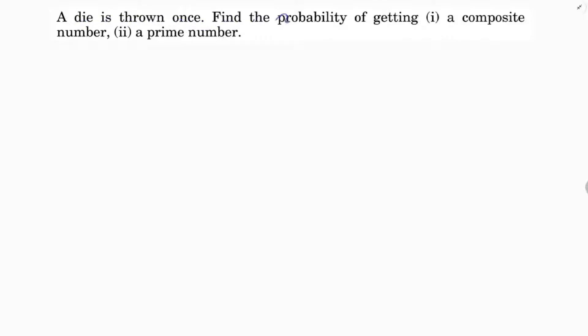A die is thrown once, find the probability of getting a composite number, a prime number.